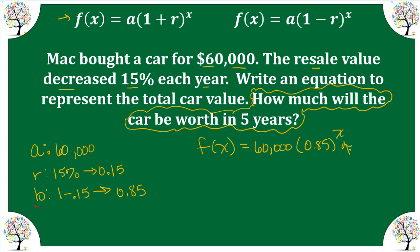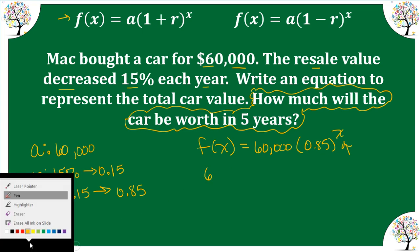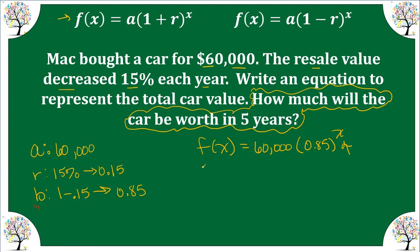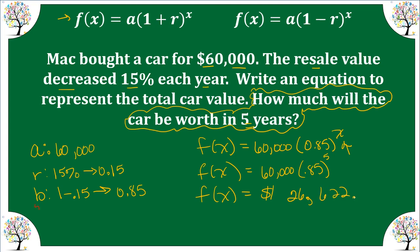Now we can plug in whatever number of years we want. The question is: in five years, how much will the car be worth? We use order of operations — 0.85 raised to the 5th, then times 60,000. We're talking about money, so our answer is $26,622.32. The car has decreased exponentially from $60,000 to just a little over $26,000 in five years.